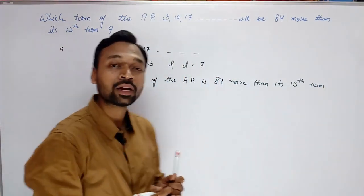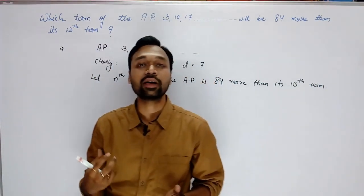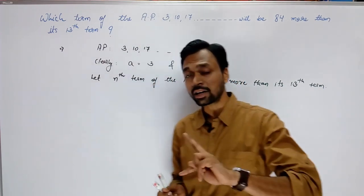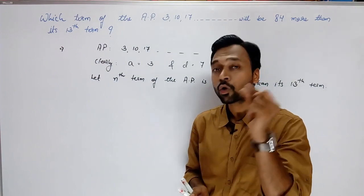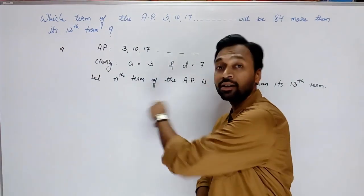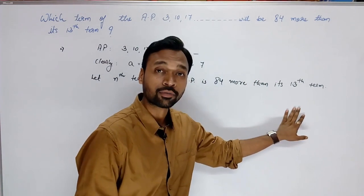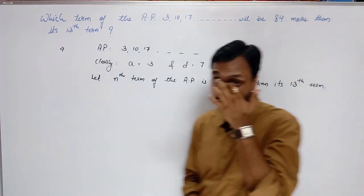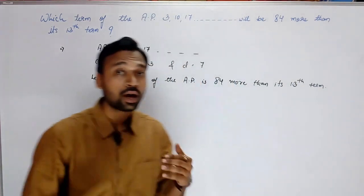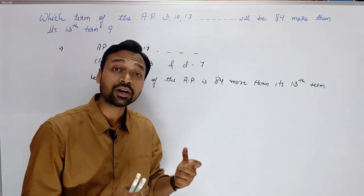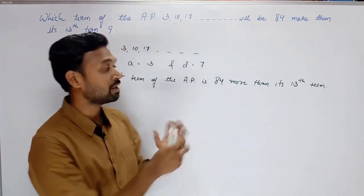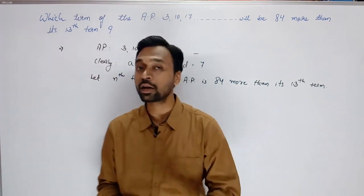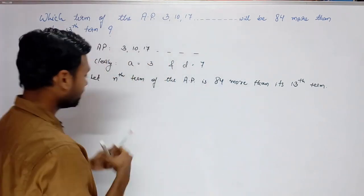Humne nth term maan li jo ki 84 more hai 13th term se. Yahan 2 terms ki baat ho rahi hai — ek nth term aur ek 13th term. Kaunsi term badi hai? nth term. Kitni badi hai? 84 badi hai. Iss tarah ke questions mein: badi term minus choti term equals to jo difference diya hua hai. Bas yahi identify karna hota hai.